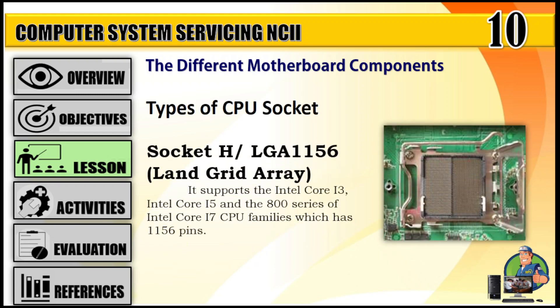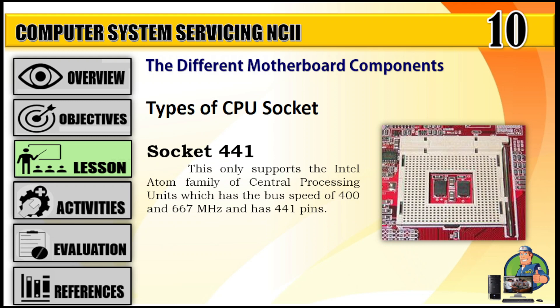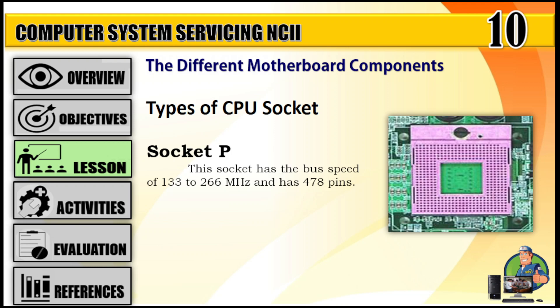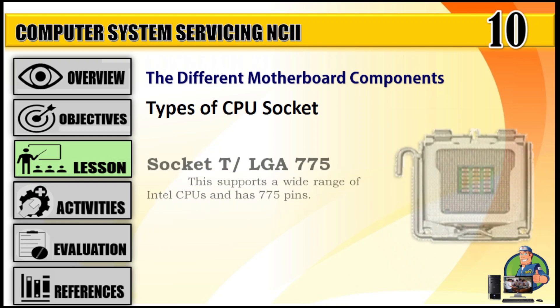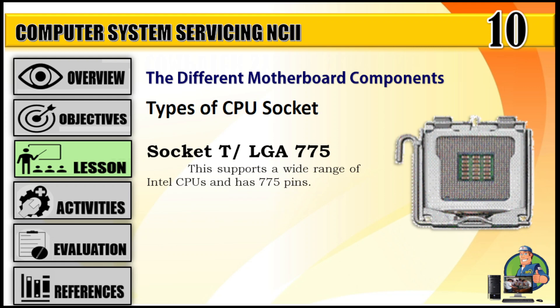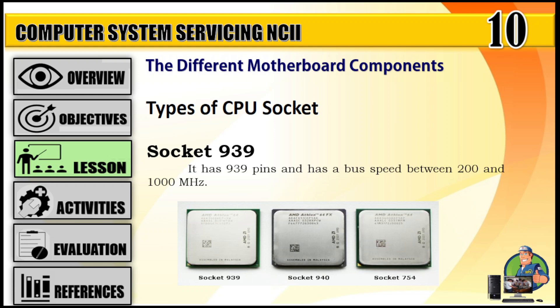Socket H / LGA 1156 (land grid array) supports the Intel Core i3, Intel Core i5, and the 800 series of Intel Core i7 CPU families, which has 1156 pins. Socket 441 only supports the Intel Atom family of CPUs, with a bus speed of 400 and 667 MHz and 441 pins. Socket T has a bus speed of 133 to 266 MHz and 478 pins. Socket T / LGA 775 supports a wide range of Intel CPUs and has 775 pins. Socket 939 has 939 pins and a bus speed between 200 and 1000 MHz.